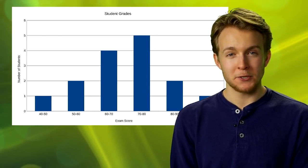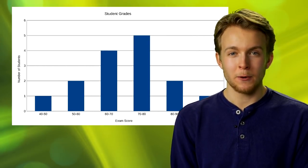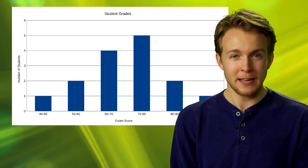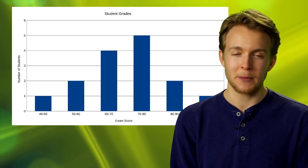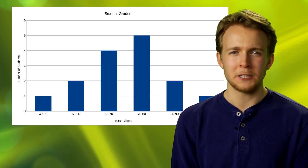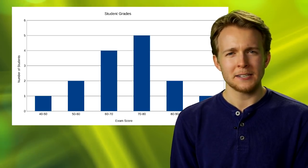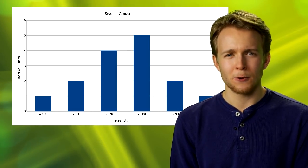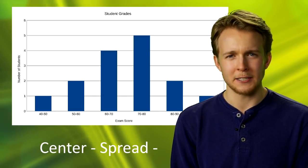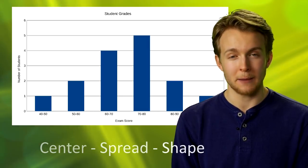Once the distribution has been displayed graphically as a histogram, we can describe the overall pattern of the distribution and mention any striking deviations from that pattern. More specifically, we should consider the following features: the histogram's center, spread, and shape, while outliers will highlight deviations from that pattern.